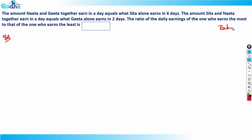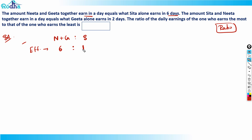It says that the amount Nita and Gita together earned in a day equals what Sita alone earns in six days. From this, I can directly write the efficiency ratio of (Nita + Gita) to Sita. Since Sita takes six days to earn what Nita and Gita earn in one day, Sita is six times slower. So the efficiency ratio of (Nita + Gita) : Sita = 6 : 1.